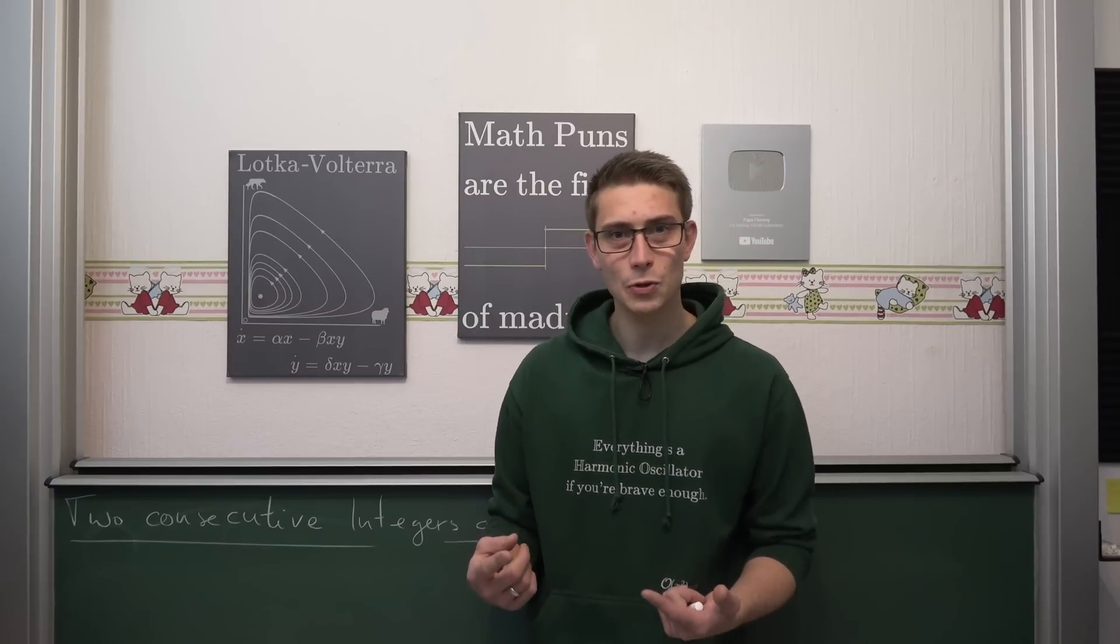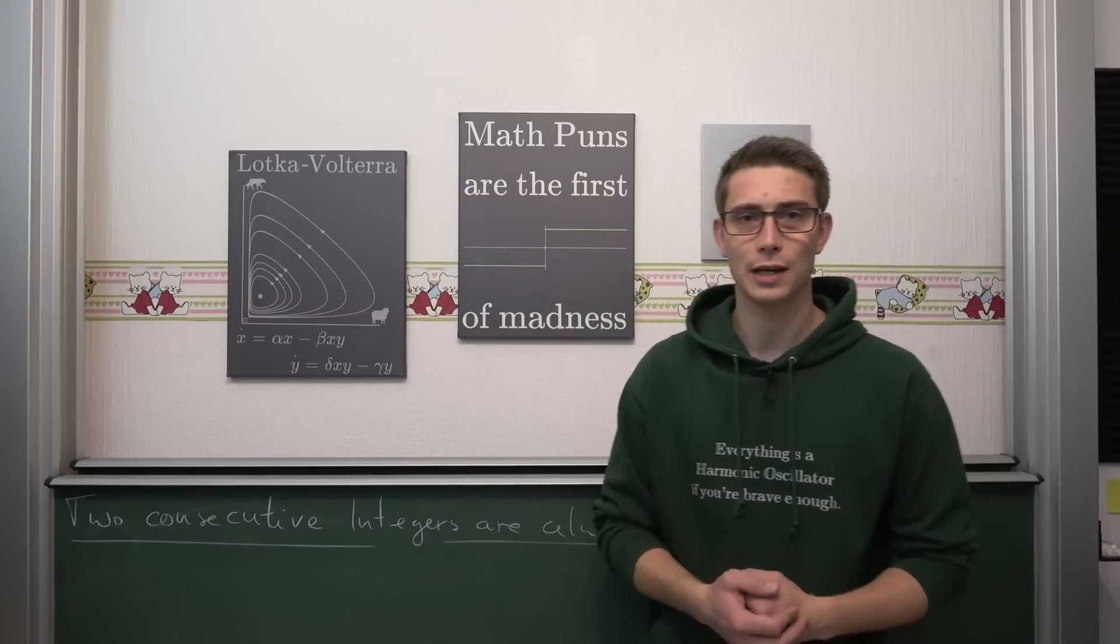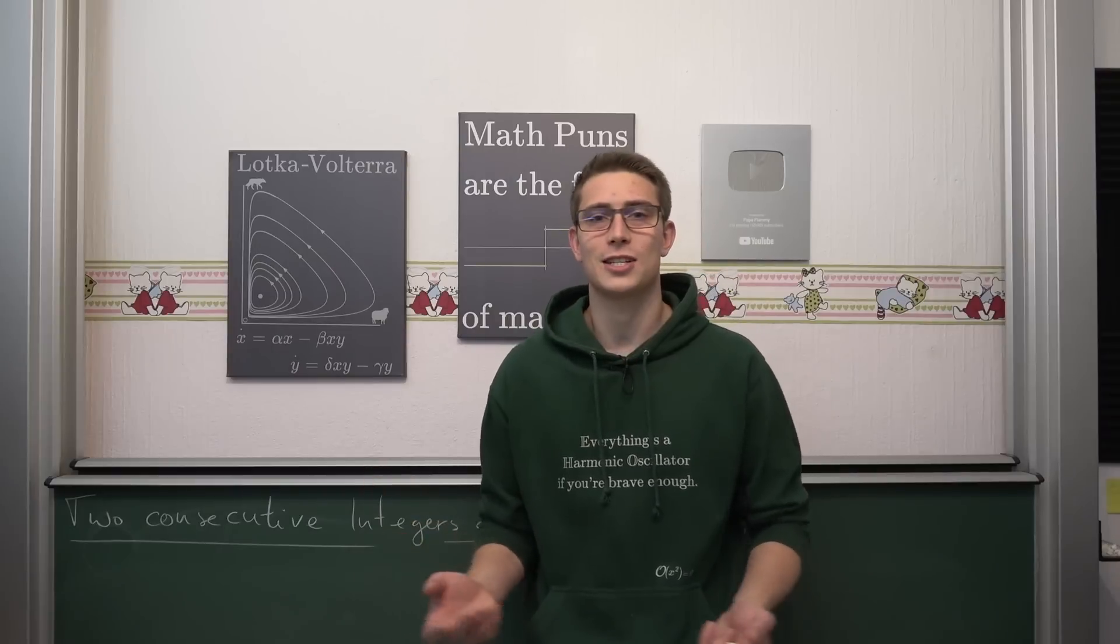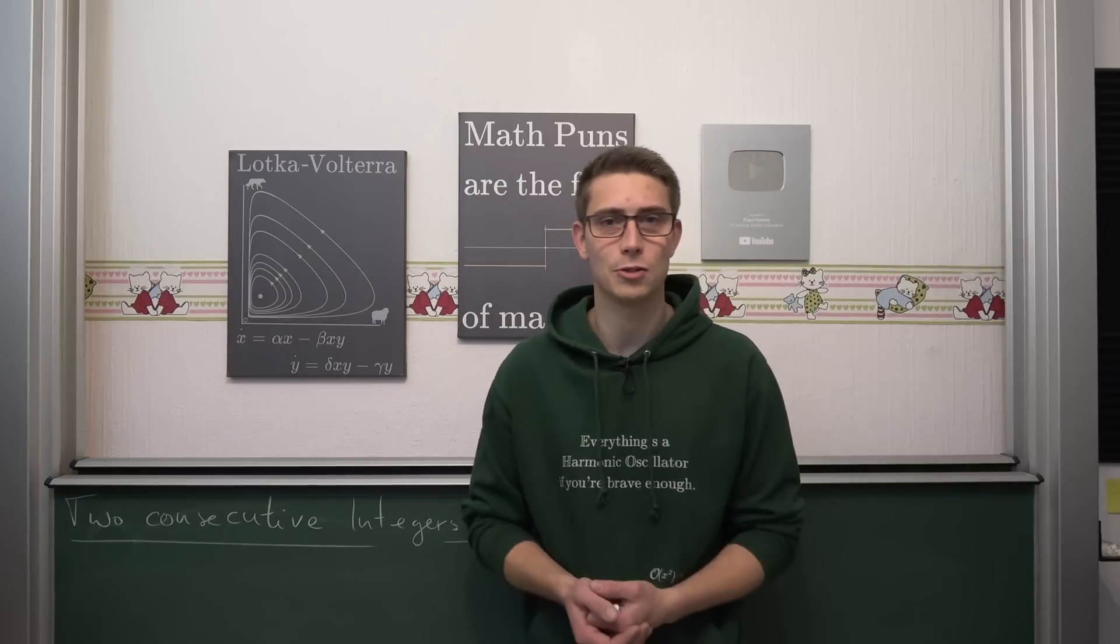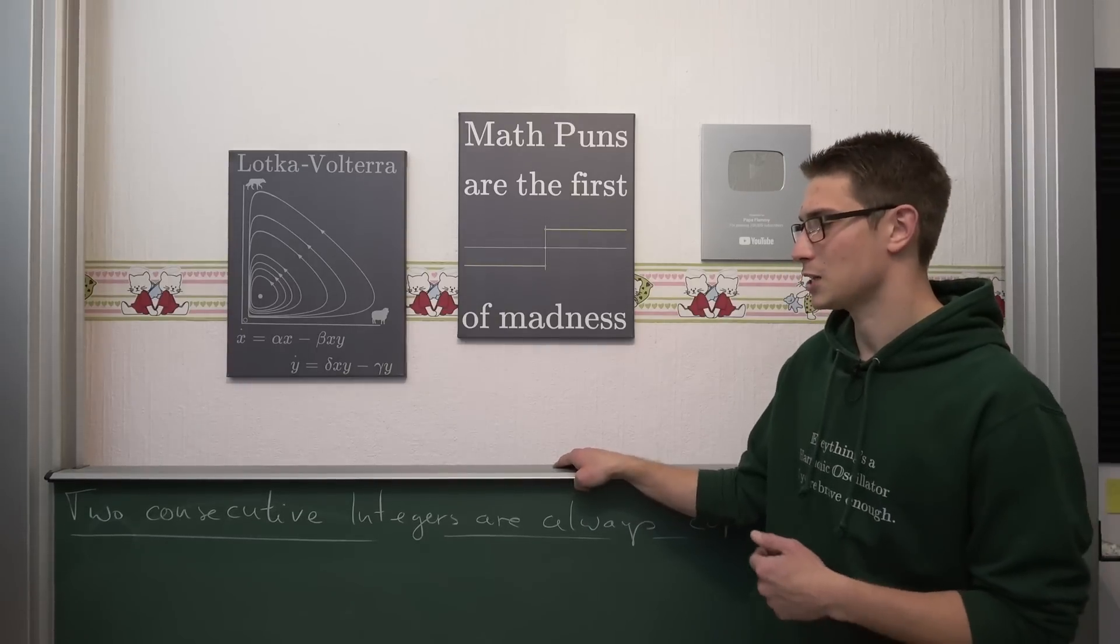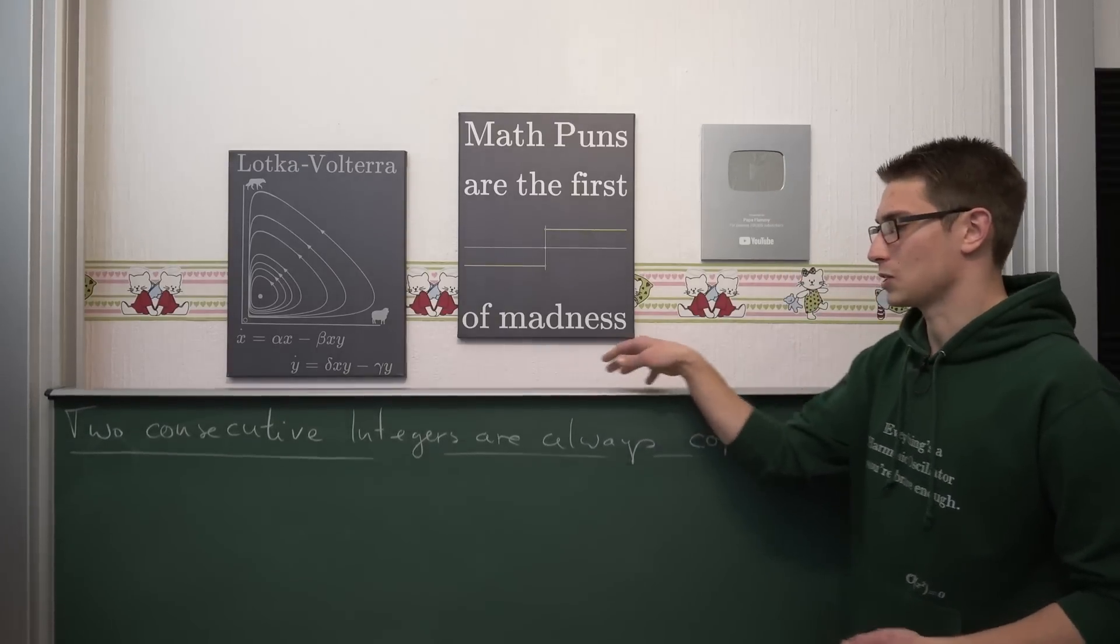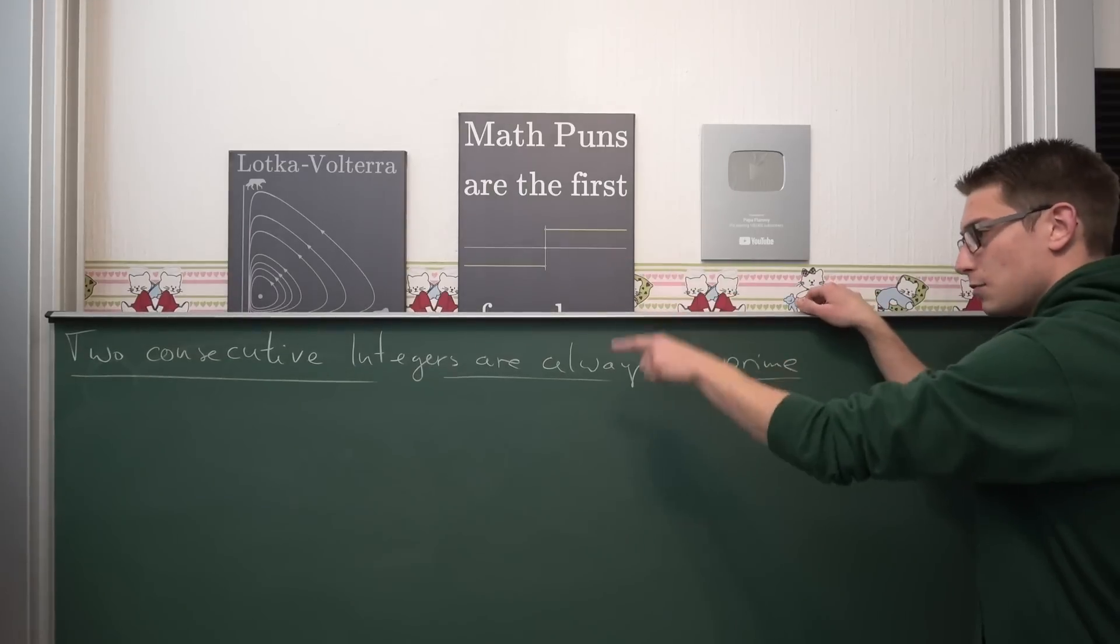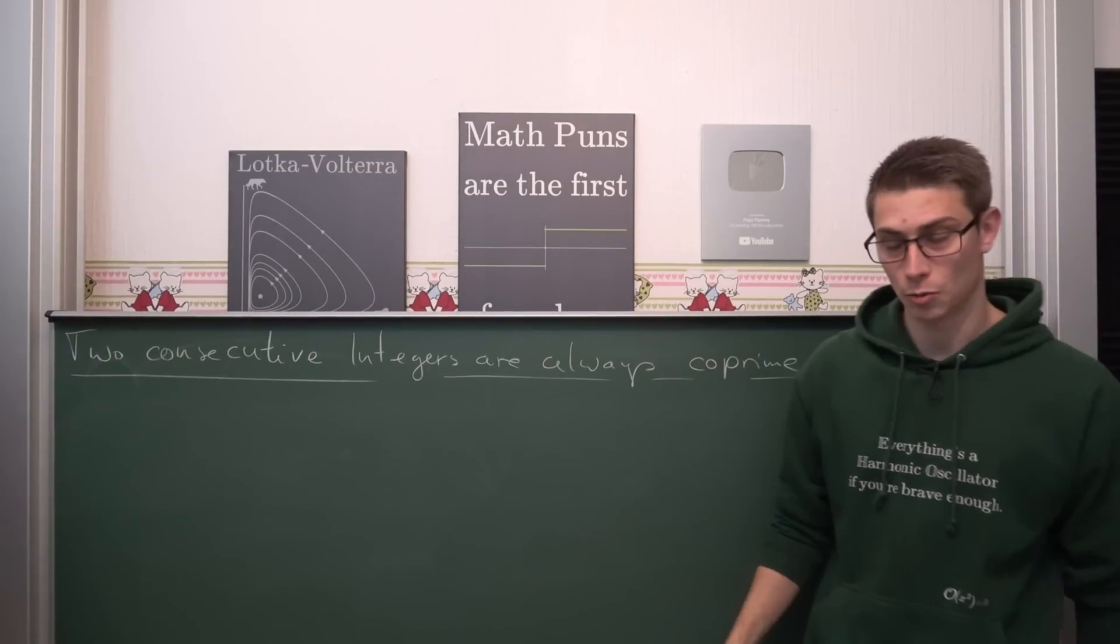Now, this is what we are going to prove today. And this is actually one of my most hated number theory proofs. I don't know why, it's just nice and sneaky and just overall very easy to prove. And it's a lot of fun. And I hope you are going to enjoy the video as much as I do enjoy proving this little statement. Two consecutive integers are always co-prime. Let's put this into more mathematical terms.